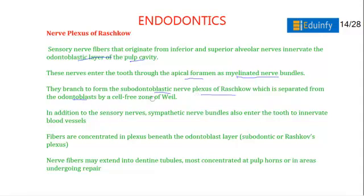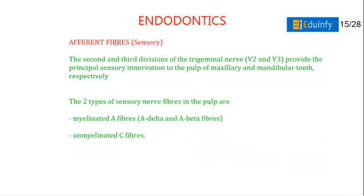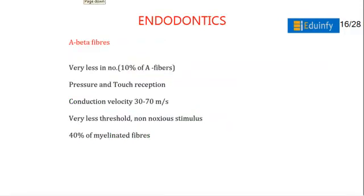Sympathetic nerve bundles also enter the tooth to innervate blood vessels. Fibers are concentrated in the plexus beneath the odontoblastic layer — the sub-odontoblastic plexus of Raschkow. Nerve fibers may extend into dentinal tubules and are most concentrated at pulp horns or areas undergoing repair. A-beta fibers are very few in number; they have pressure and touch reception with a conduction velocity of 30 to 70 meters per second, low threshold to non-noxious stimuli, and constitute about 40% of myelinated fibers.